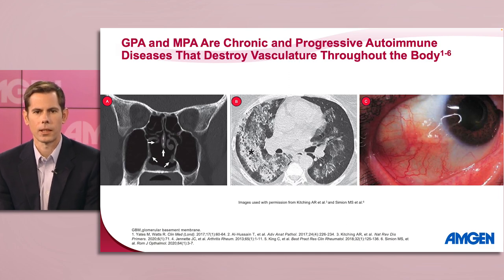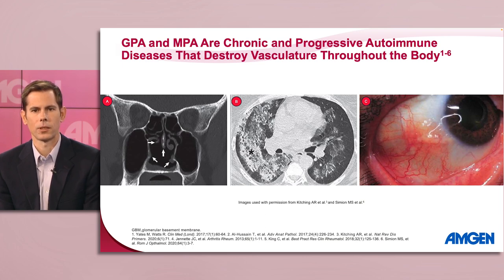In image A, we can see sinonasal disease with coronal CT images showing destruction of the nasal septum, inferior turbinates, and right middle turbinate in a newly diagnosed patient. Image B shows a chest CT with ground glass opacities in a patient with ANCA-associated vasculitis with acute pulmonary hemorrhage. Image C demonstrates scleritis in a patient with GPA. Now that we understand what GPA and MPA are, let's take a closer look at how they develop.